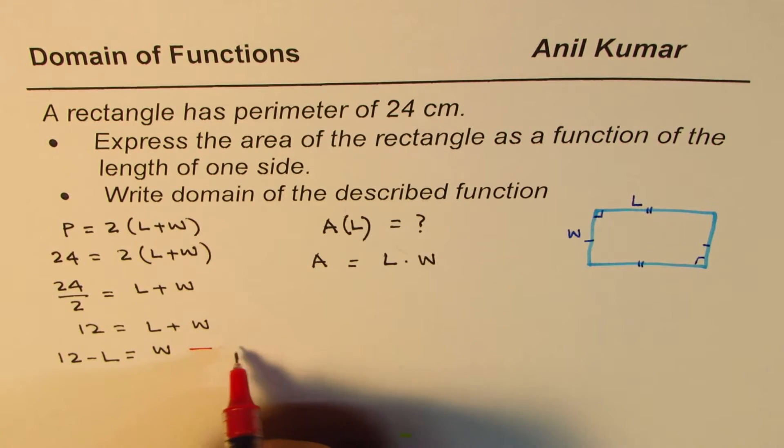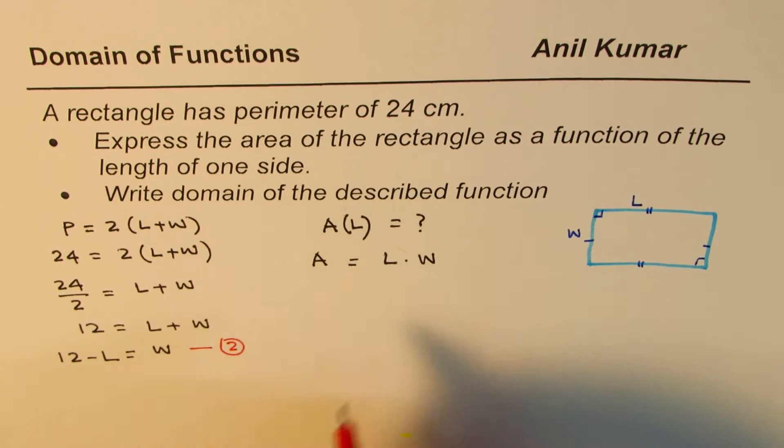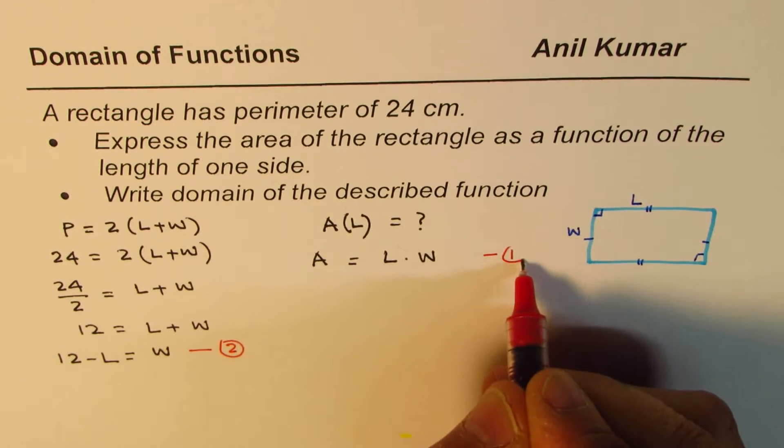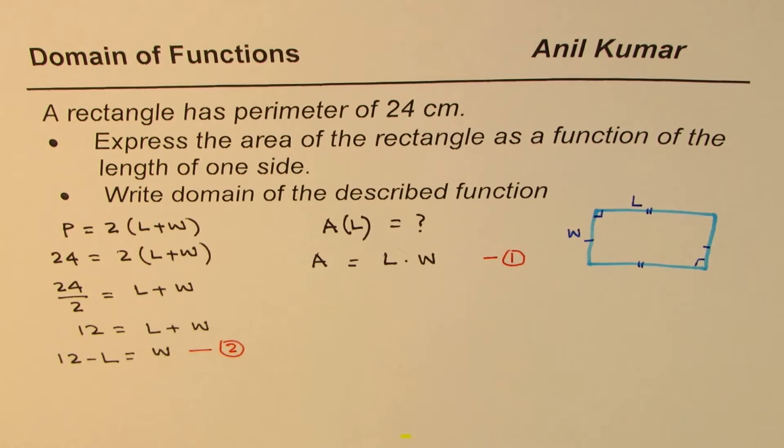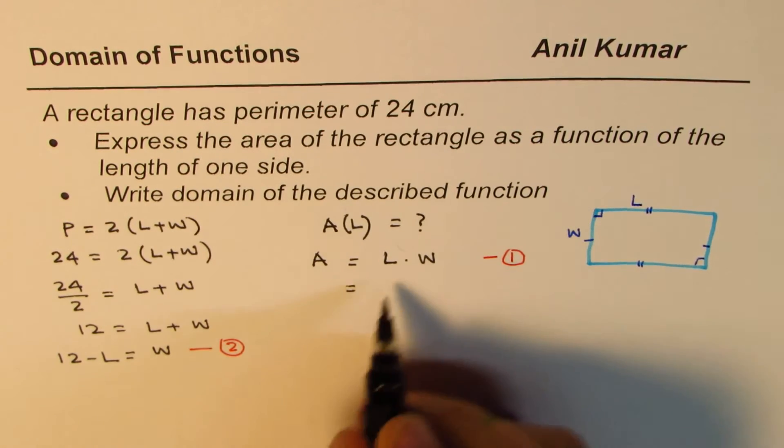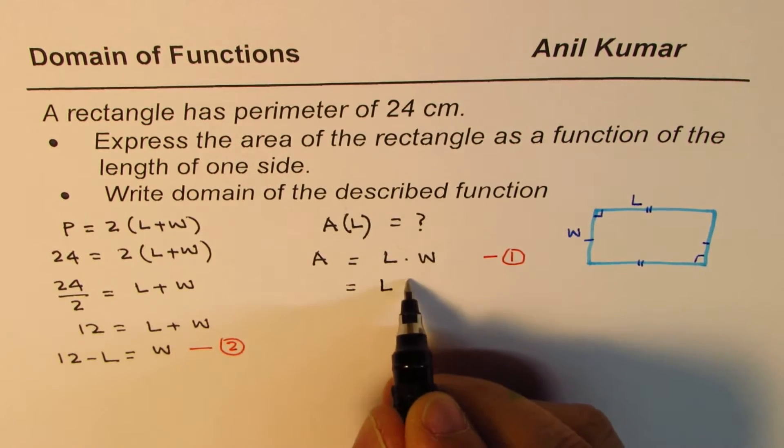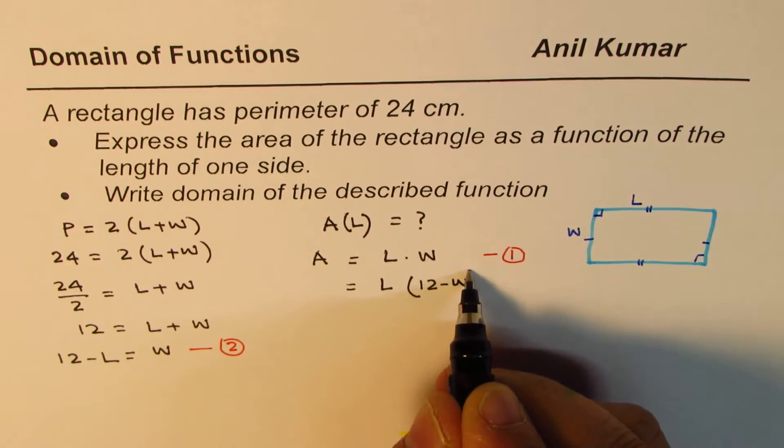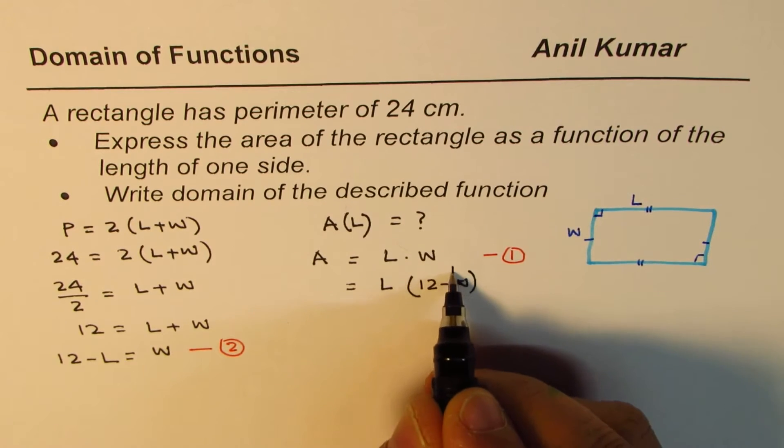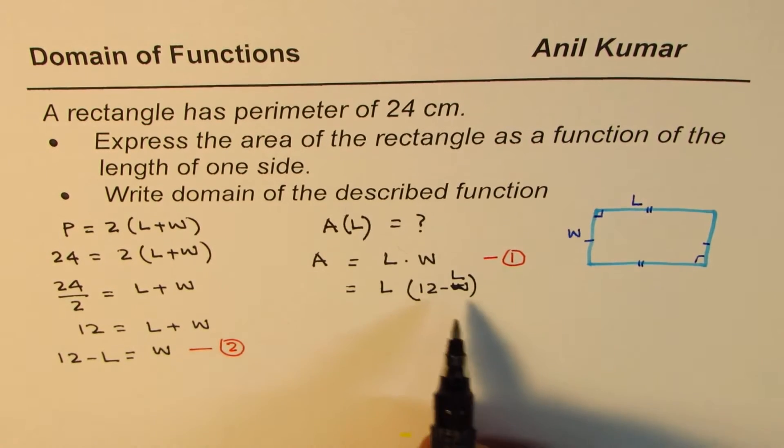So we'll call this equation 2, and this equation as 1, and we'll substitute 2 in 1. So as soon as you do that, what you get is function in length: L times 12 minus L. Do you get an idea? So this is what you get.